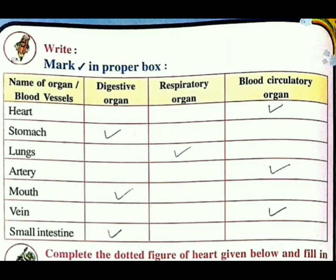Lungs — यानी फेफड़े — respiratory organ होता है — स्वासन अंग — जो स्वास लेते हैं वो निकालते हैं, वो फेफड़ों से लेते हैं. Artery — यानी धमनी — blood circulatory organ से जुड़ा हुआ है. Small intestine — digestive organ से जुड़ी हुई है. Next: artery यानी धमनी — blood circulatory organ. Vein — also blood circulatory organ. Small intestine — digestive organ.